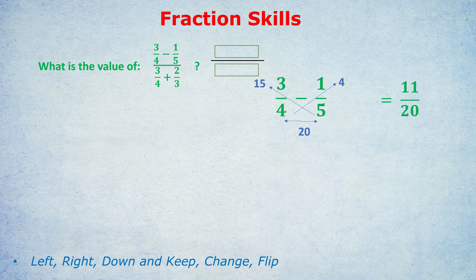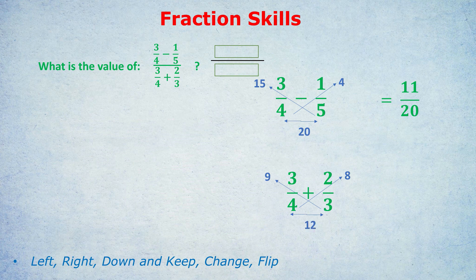Did you get that? Well, you've got one last chance to do the addition here at the bottom. 3 fourths plus 2 thirds. Going to the left, we multiply 3 times 3 is 9. 4 times 2 is 8. And 4 times 3 is 12. And what do we do with the 9 and the 8 at the top? We add them, because there's a plus sign between the fractions. 9 plus 8 is, of course, 17. So the answer is 17 over 12.